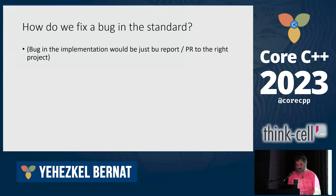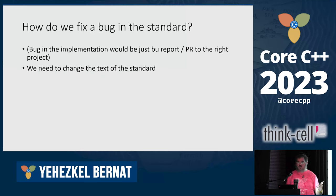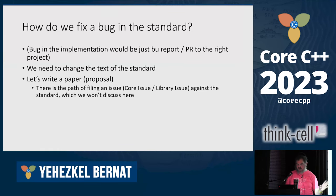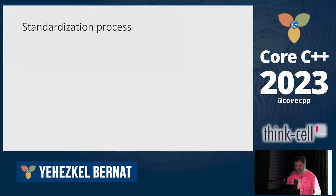So how do we fix a bug in the standard? In an implementation, okay, you open a PR and discuss it. But for the standard, we want to change the text of the standard. It doesn't matter if we want to add a new feature, fix a bug, or whatever change — the main tool is to write a paper, sometimes called a proposal, proposing a change to the standard. There's also another process for filing issues, but I won't go into that in this talk.